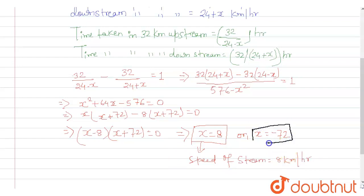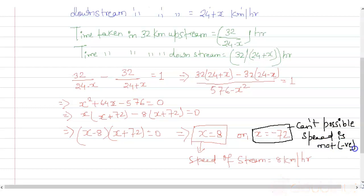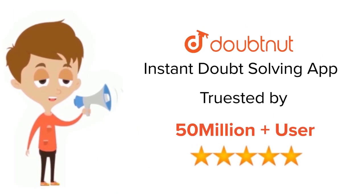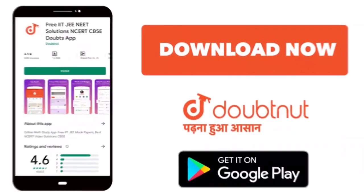-72 cannot be possible because speed is not negative. For class 6 to 12, IIT, JEE, and NEET level, trusted by more than 5 crore students, download Doubtnet app today.